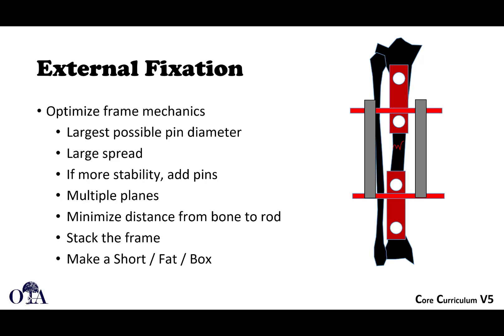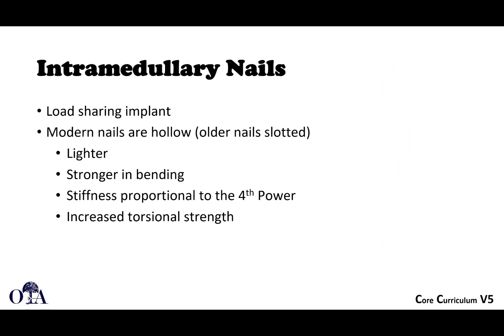With external fixators, all the things you can do to maximize stability include: using the largest pin diameter you can safely place, maximizing pin spread, adding pins in multiple planes, minimizing the distance from bone to rod, and using smaller rings if using a ring fixator since they're closer to the skin and more stable. Adding bars or stacking the frame also increases stability. These are all options within reason depending on what you're trying to achieve. We'll pause here and finish in the next video, picking up on intramedullary nails.